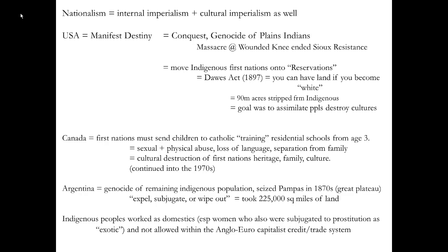In the United States you have Manifest Destiny. Unlike the French process, which is violent from time to time but in the 1800s is more of a cultural imperialism — the imposition of French laws, the king's laws — in the United States it's violence. It's the conquest of the West. The genocide of the Plains Indians. The massacre at Wounded Knee ending Sioux resistance. Not the battle — it's the massacre at Wounded Knee.